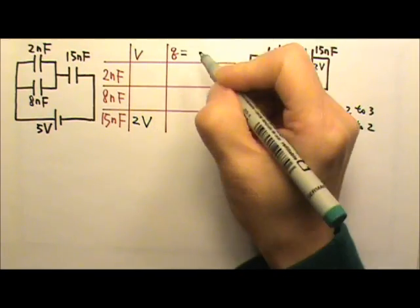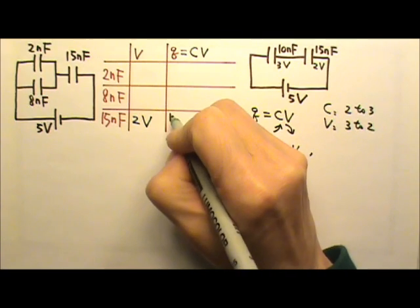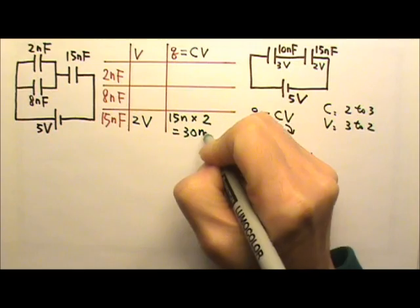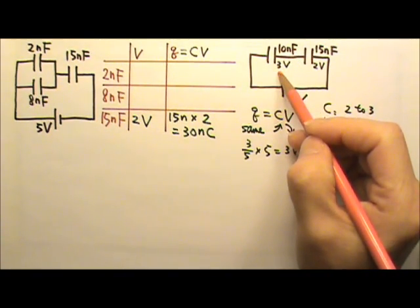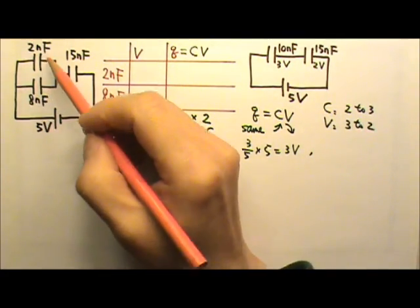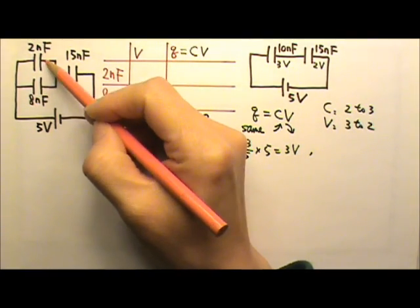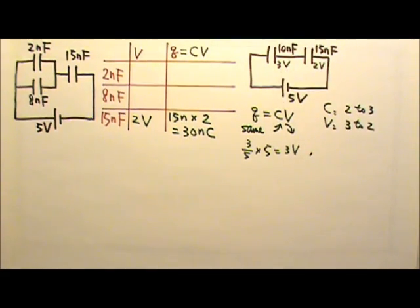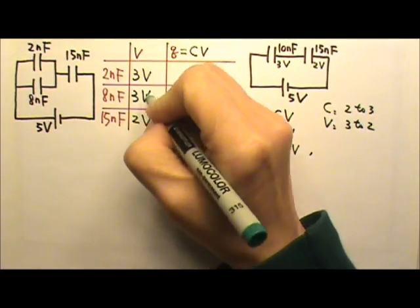To find the charge, we use Q equals CV. For the 15 nanofarad: 15 nano times 2 gives 30 nanocoulombs. The 10 nanofarad gets 3 volts, but this 10 nanofarad is really the two parallel capacitors. If capacitors are in parallel, they get the same voltage as their equivalent — so they each get 3 volts.